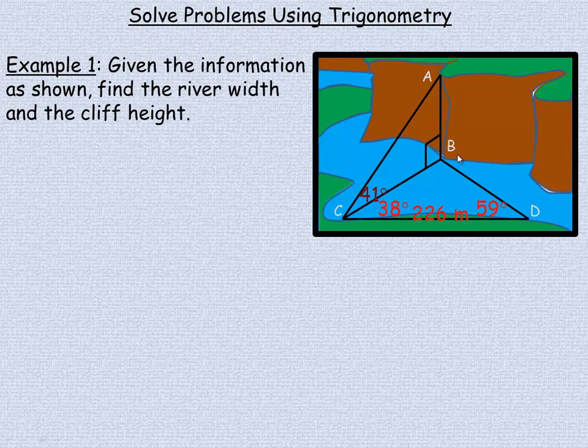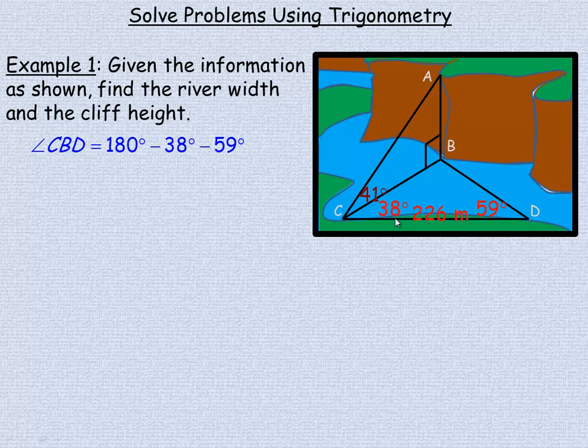Now in the triangle, this imaginary triangle that's on the river here, we know two angles. We can find the third one by subtracting 38 and 59 from 180 degrees. Because remember in any plane triangle, the three angles add up to 180. So angle CBD would be 180 minus 38 and 59, which works out to be 83 degrees.